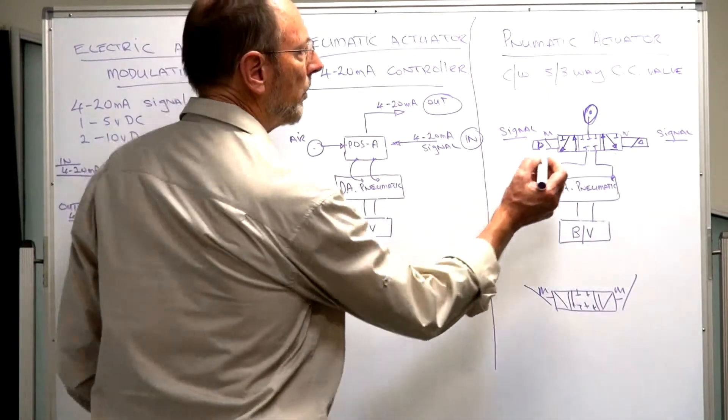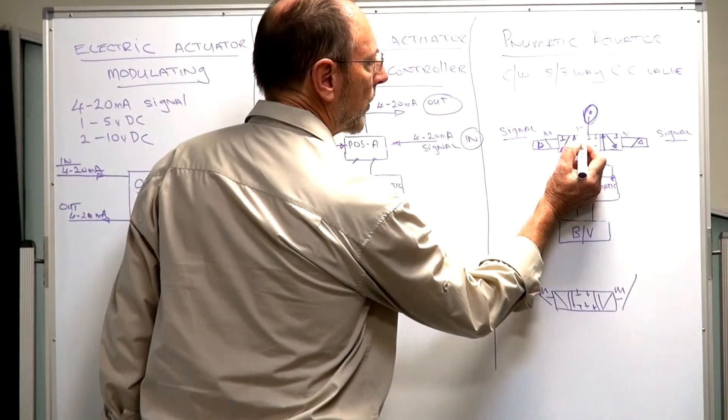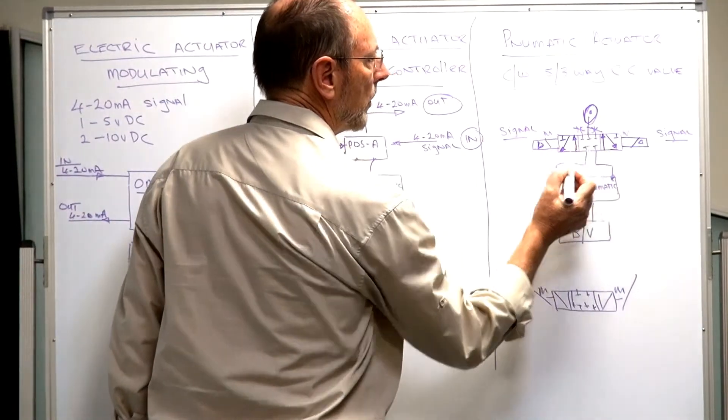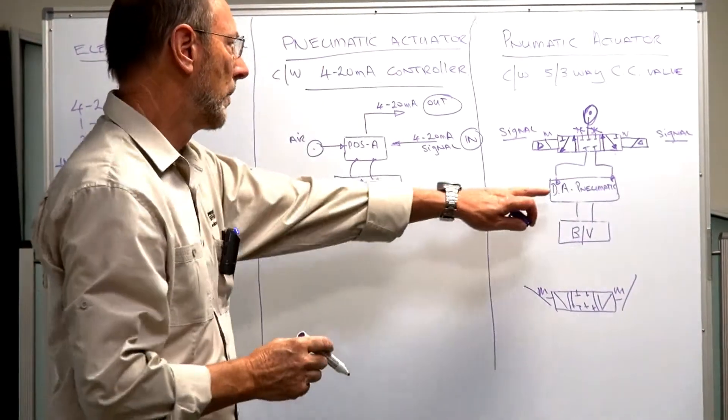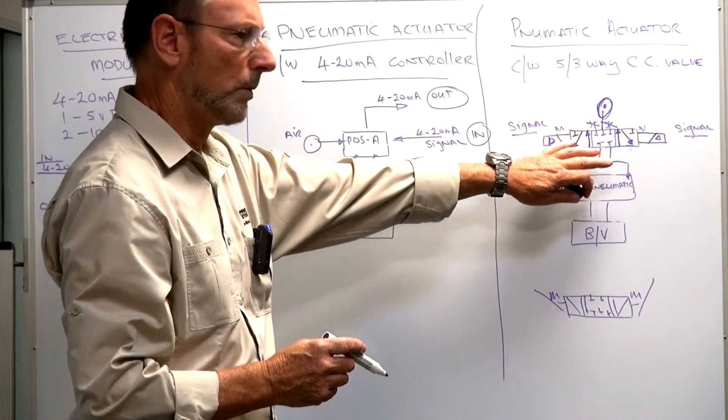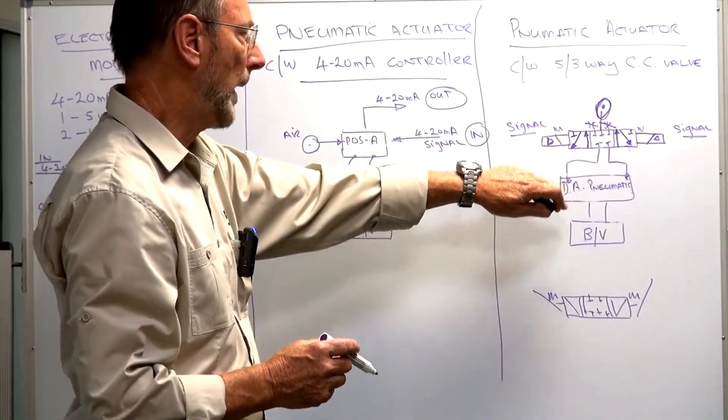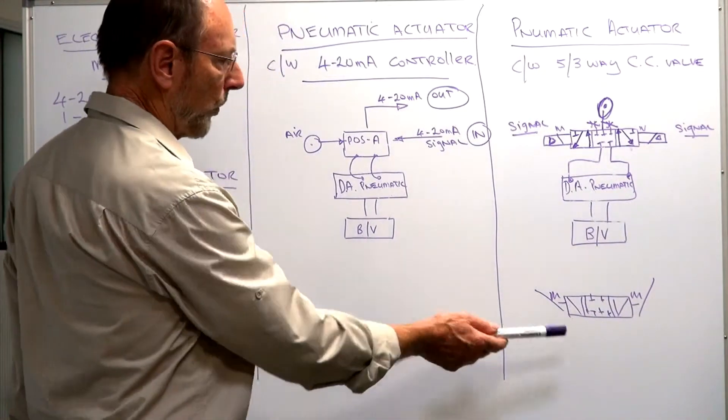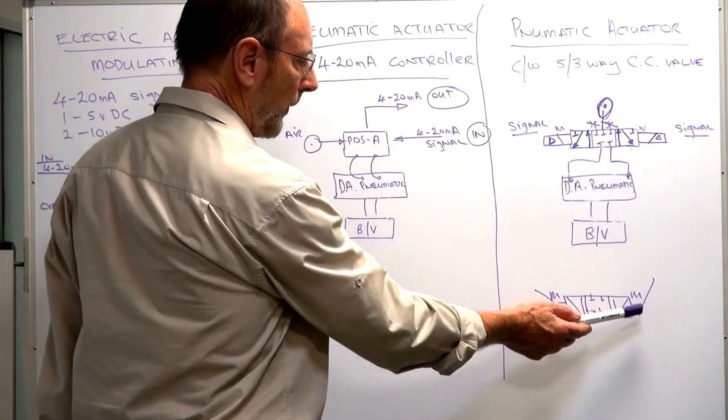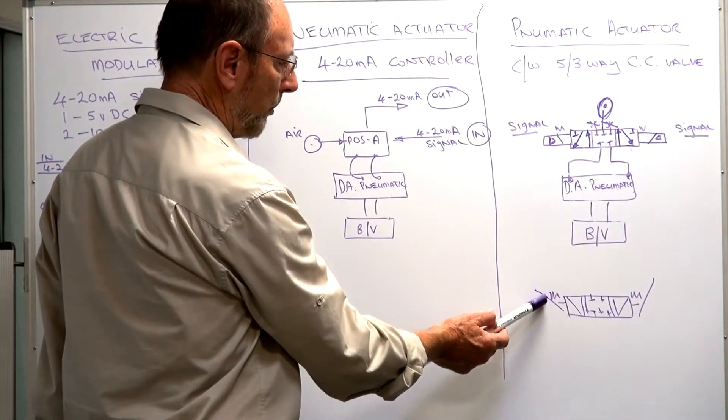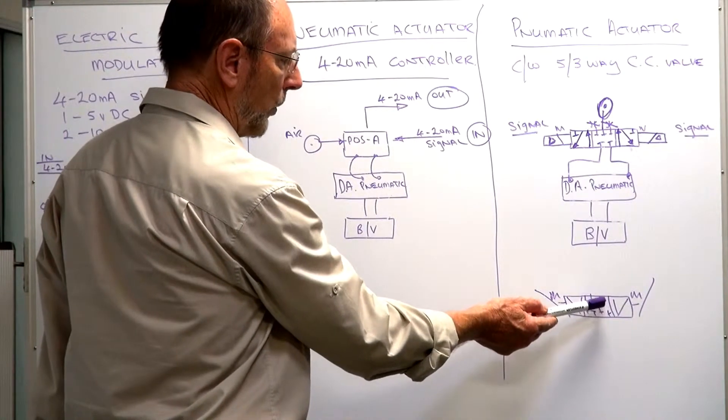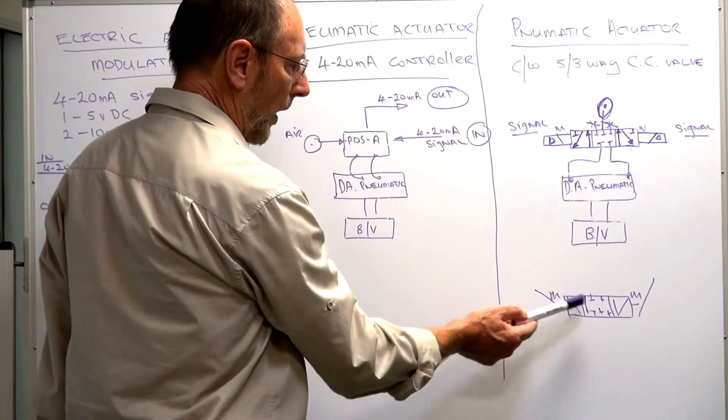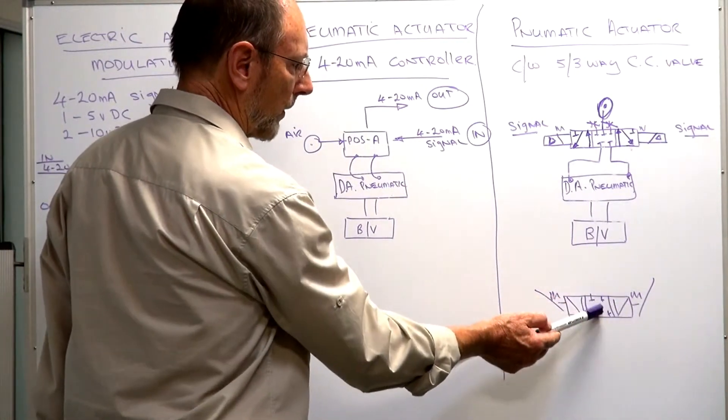Normally we would also put exhaust flow controls on here to give a slower speed and give this more time for the unit to react and position it more easily. With the lever, it's the same thing. We push the lever over and the actuator will go out. Let the lever go and the spring will take it to the central position.